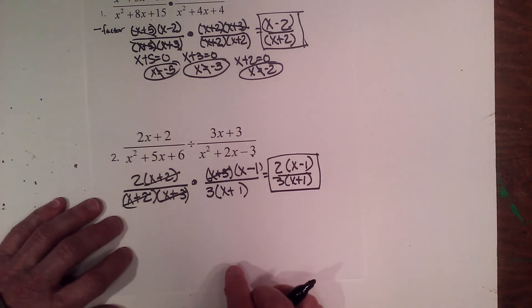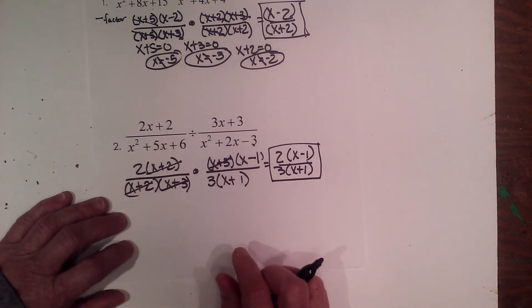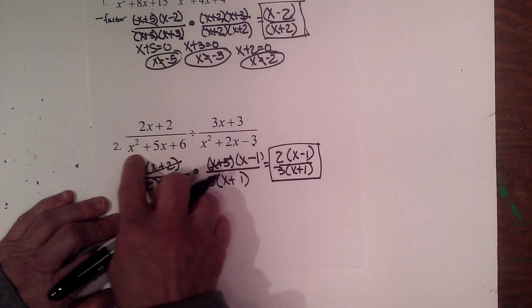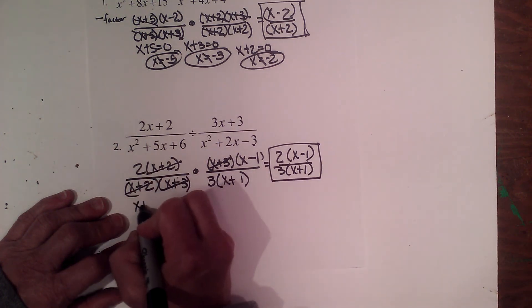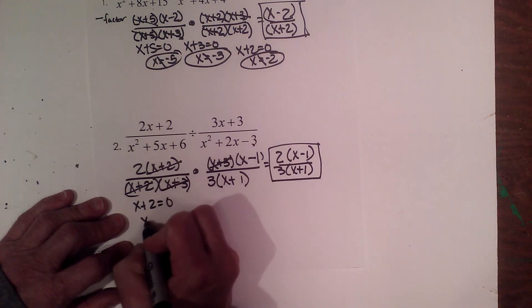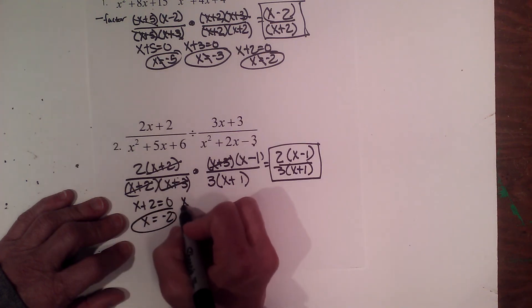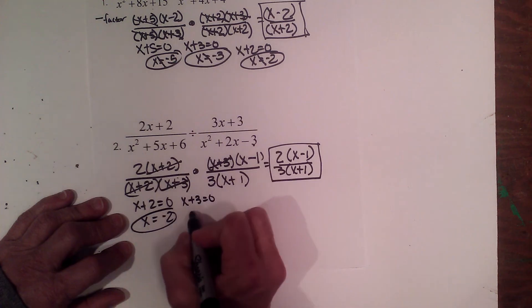Now let's go back and look at excluded values. Excluded values are anywhere your denominator is 0. So we need to look and see where did these factors, where are these factors equal to 0. And the first one is where x is negative 2. The second one, x plus 3, that's where x is equal to negative 3.